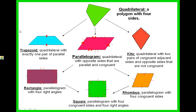A trapezoid is a quadrilateral with exactly one pair of parallel sides. The red arrows indicate that this is the pair of parallel sides.